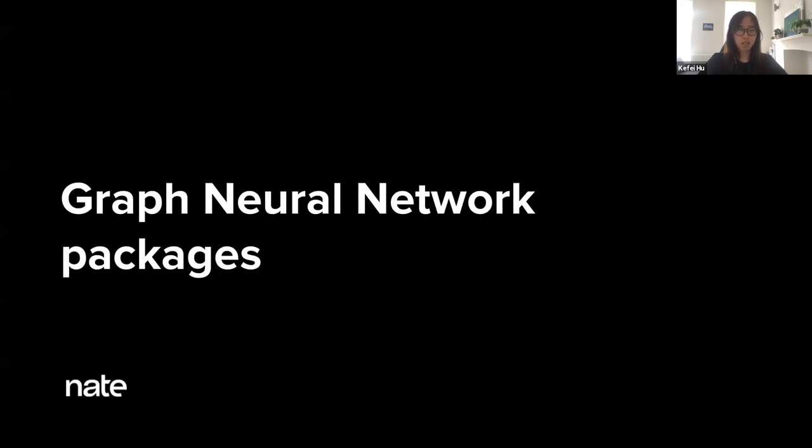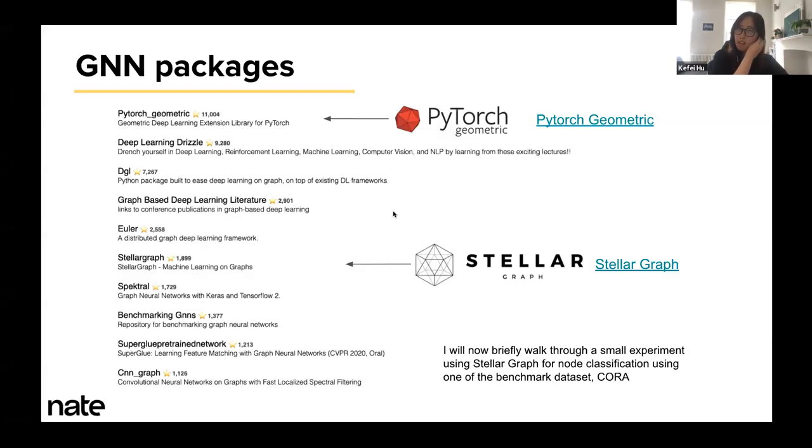I'm going to move on to the application part. Since graphs have gained a lot of attention in research and applications, there are a couple of really well-developed GNN packages for Python. My personal experience: I've used PyTorch Geometric, which is a graph deep learning extension library for PyTorch, and I've used Stellar Graph that is built on TensorFlow and Keras. Both of these packages contain a huge variety of graph models and a lot of common benchmark datasets for you to explore. While I recommend both of them, I found Stellar much easier to learn for beginners. In the next 10 minutes, I will walk you through a node classification example using Stellar Graph.